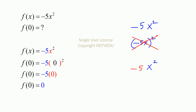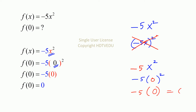So let's do that. Negative 5 x squared — at the position of the x, we substitute 0. So we have negative 5 times 0 squared. What is 0 times 0? That is 0. So this is negative 5 times 0, and that is equal to 0.